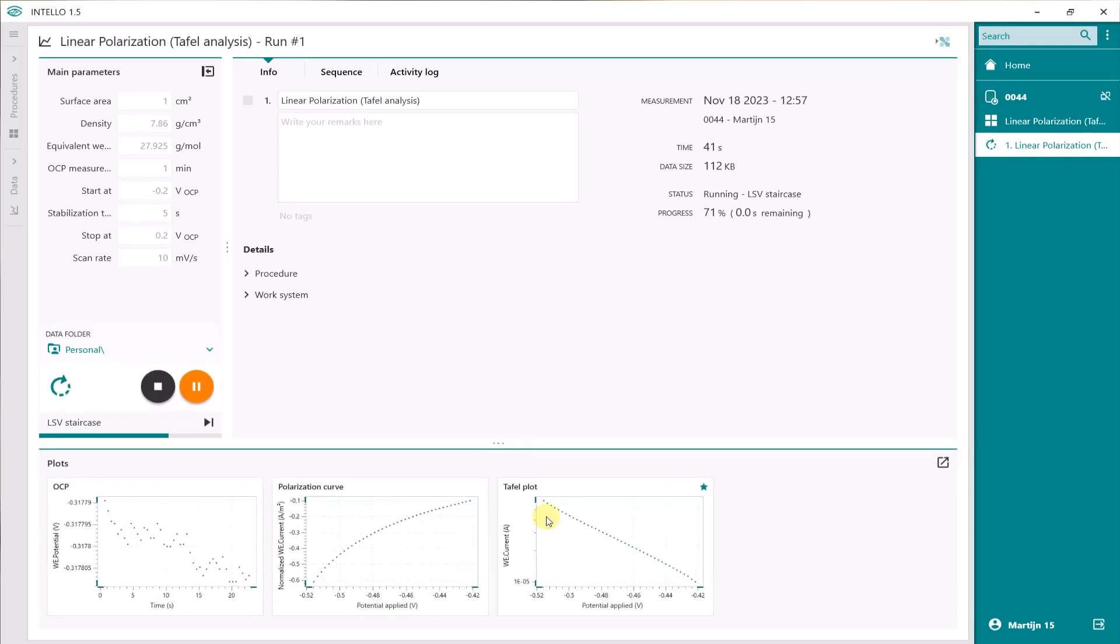That's just a logarithmic scale of the current. Here you will find the E-corr where the current is zero. You see, at zero current, you will find the corrosion potential. The measurement is finished.